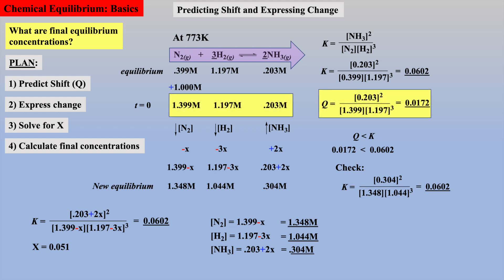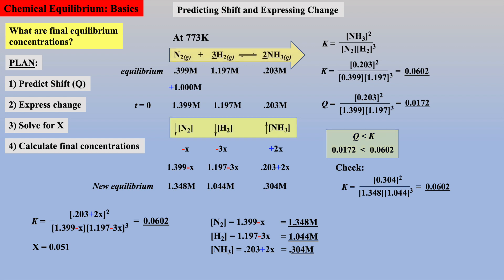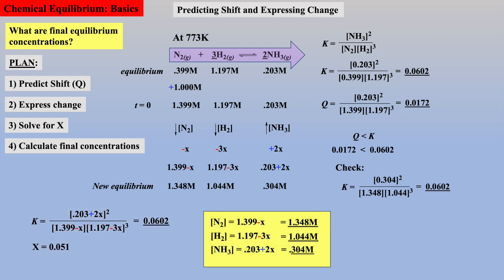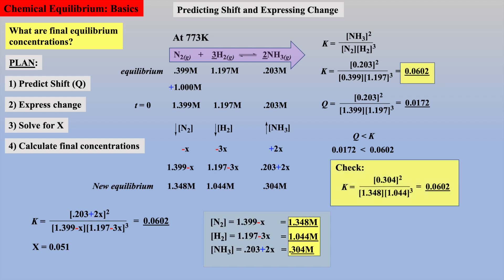In summary, we first did a Q calculation with initial concentrations to compare against the given K, which allowed us to predict direction of shift and express the change. Next, we placed these equilibrium expressions into the law of mass action and solved for X, which afforded final equilibrium concentrations. As a final check, these equilibrium concentrations were placed into the law of mass action to calculate a K value and verify it matched the given K. Many similar and more challenging equilibria exercises employing the quadratic equation and introducing the 5% rule, as well as Le Chatelier's principle, are covered in the next video.